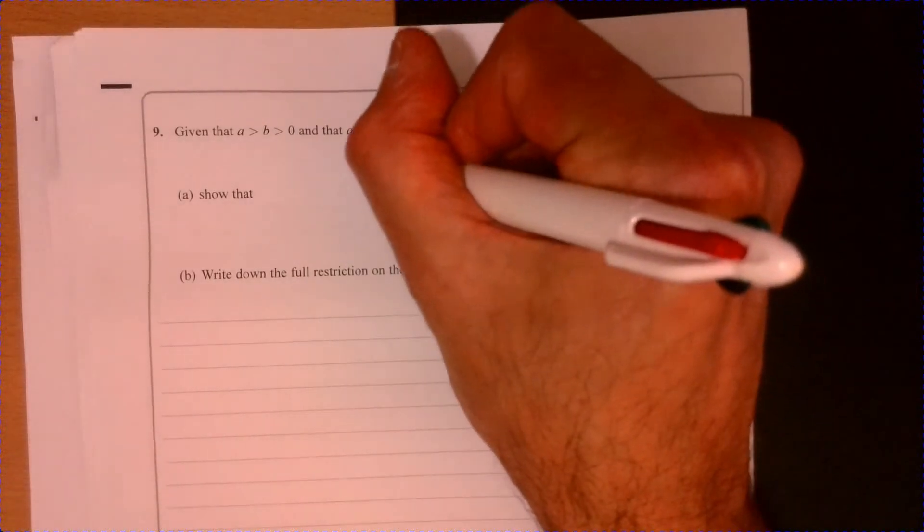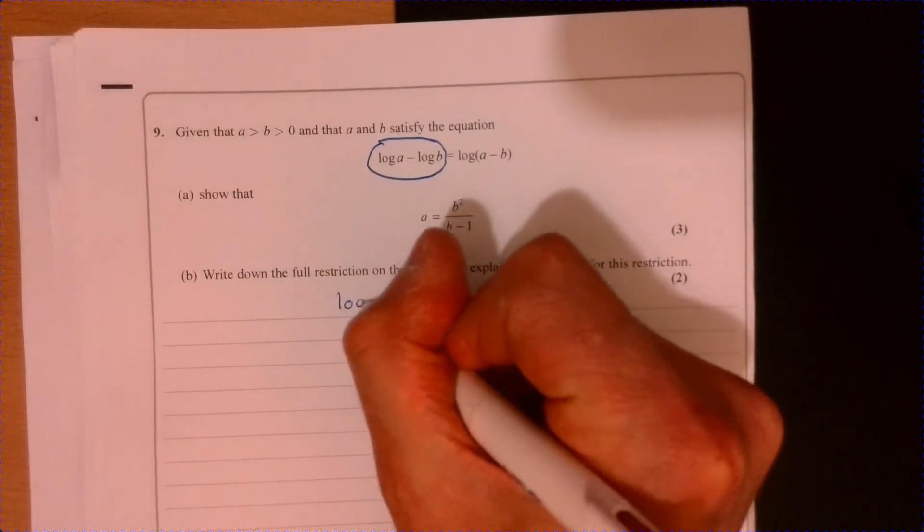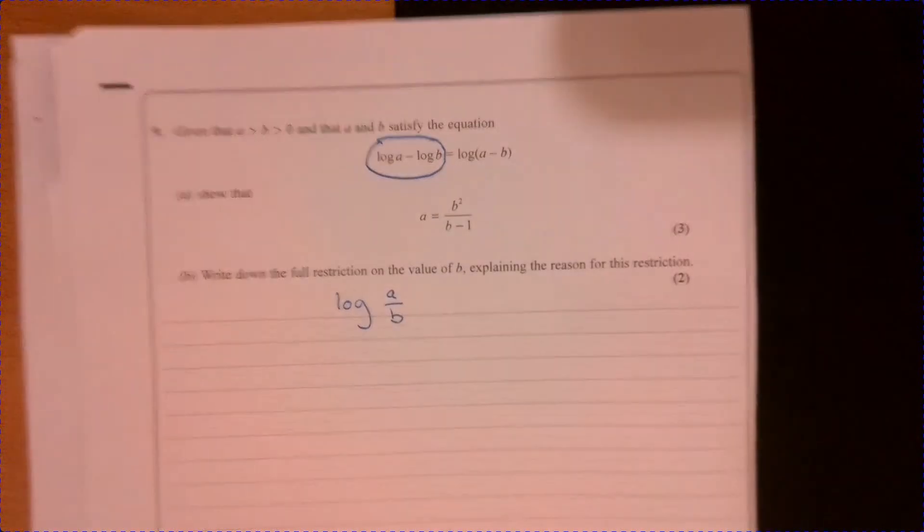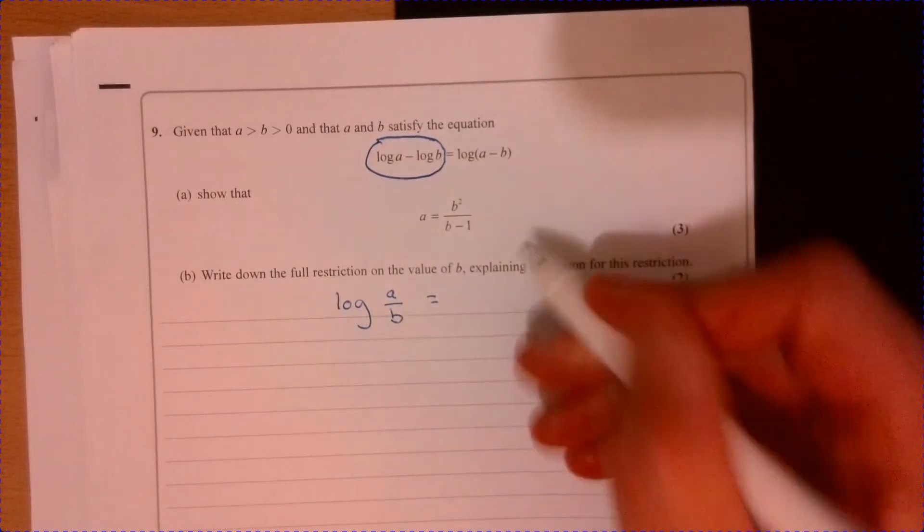Question nine. Let's start off by just thinking about how we write that part just there. Well, that's the same. Just using my basic log laws. I know if I combine these two together, I can write A over B there.